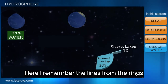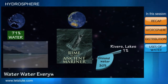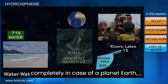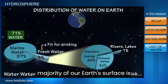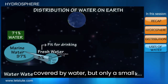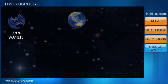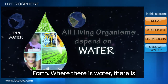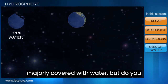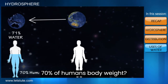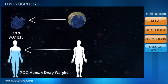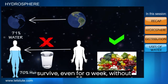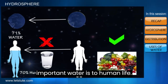I remember the lines from the Rime of the Ancient Mariner: 'Water, water everywhere, but not a drop to drink.' It stands completely true for our planet Earth. A vast majority of Earth's surface is covered by water, but only a small portion is fit for drinking. Water makes up approximately 70% of the human body's weight. An average person could live without food for nearly a month, but it would be difficult to survive even a week without water — that's how important water is to human life.